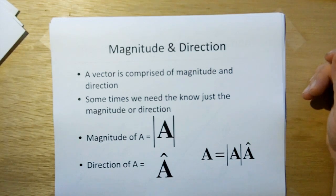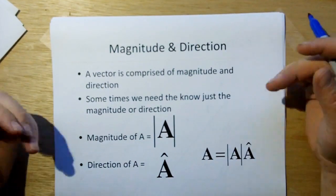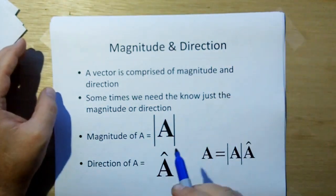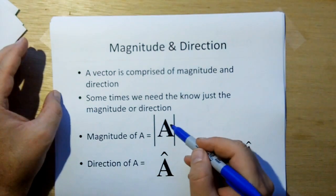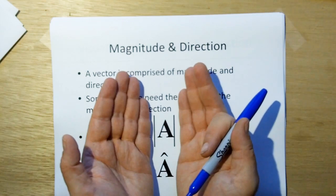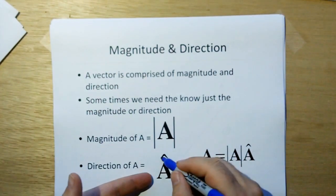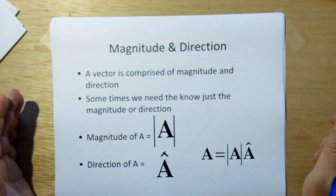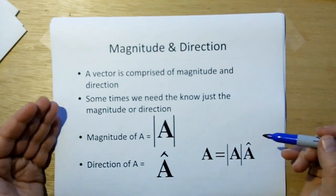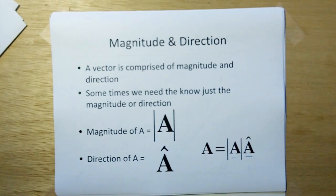A vector is a magnitude and direction, and sometimes we like to break that up. Sometimes we want to know just the magnitude of a vector to use in a non-vector equation, and sometimes we just want the direction of a vector to make another vector parallel to it. We represent the magnitude of vector A with A inside vertical brackets — that symbol represents the magnitude without the direction, just the length of the arrow regardless of what direction it points. The direction of A is represented by A with a little caret on top. Multiplying the magnitude times the direction gives back the original vector.